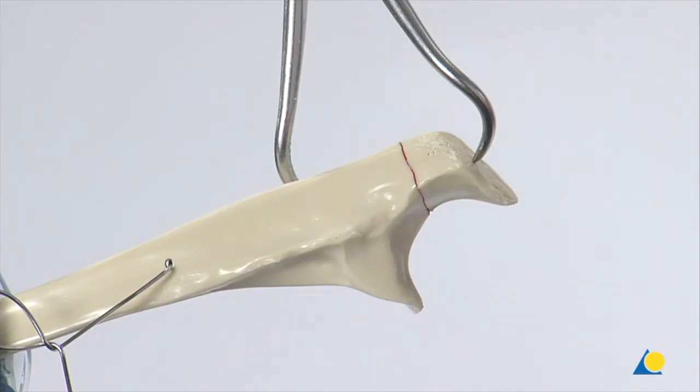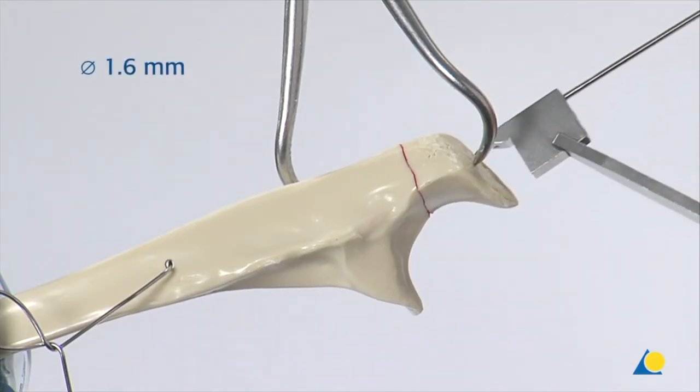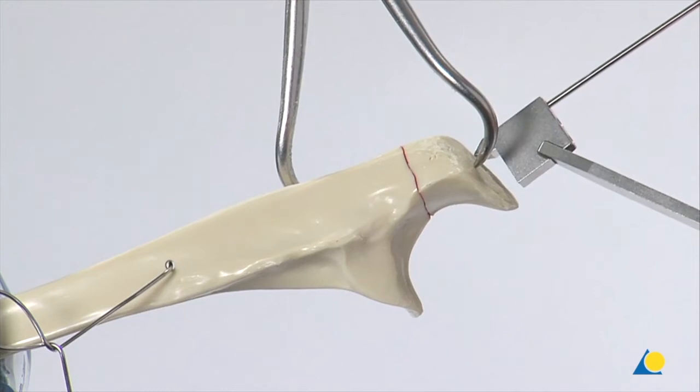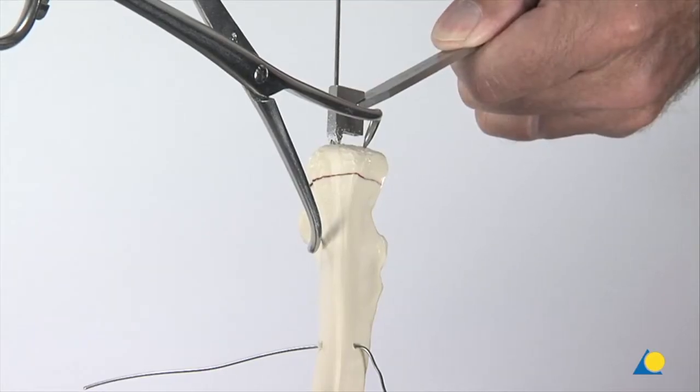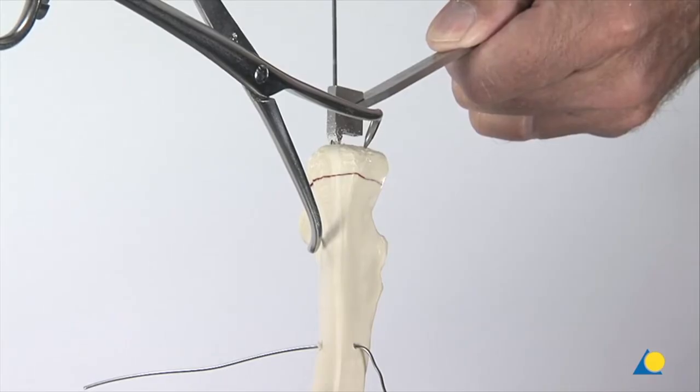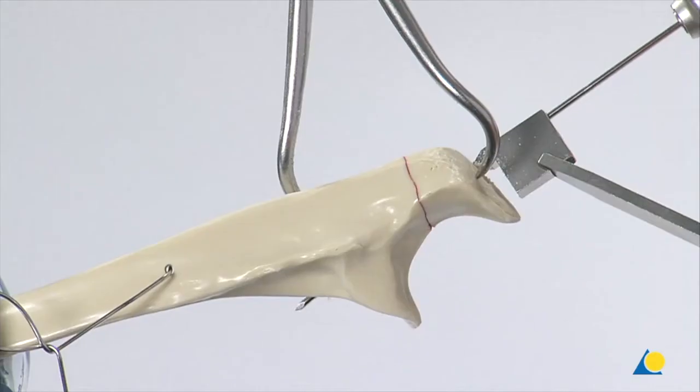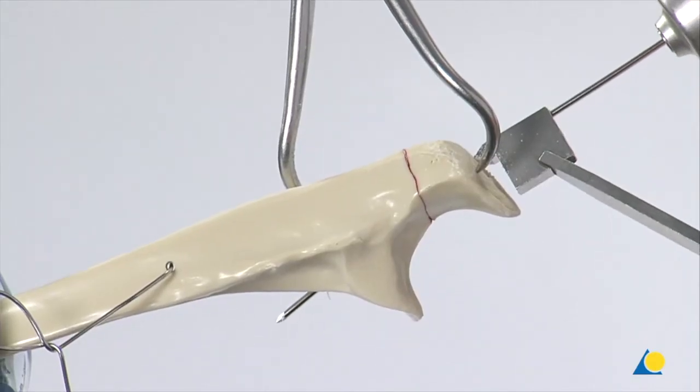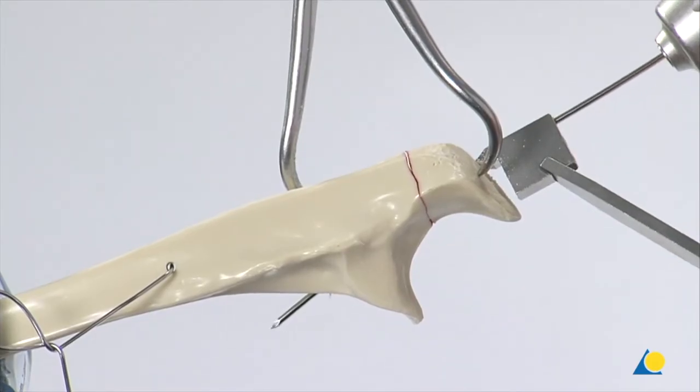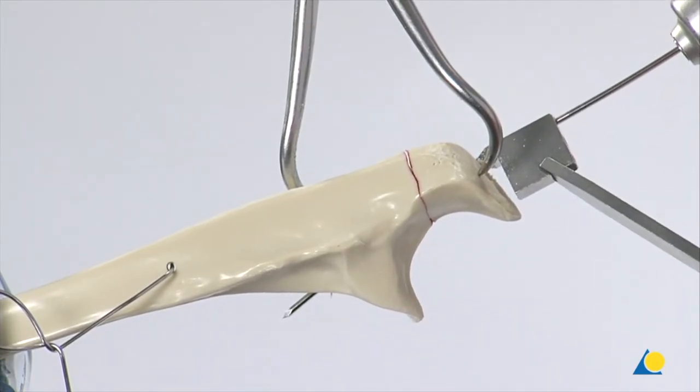Using the triple end of the 2.0 drill guide, the first 1.6mm K-wire is inserted through the point of the olecranon parallel to the shaft of the ulna and as close as possible to the joint. After the anterior cortex has been perforated, the K-wire is retracted approximately 1cm.